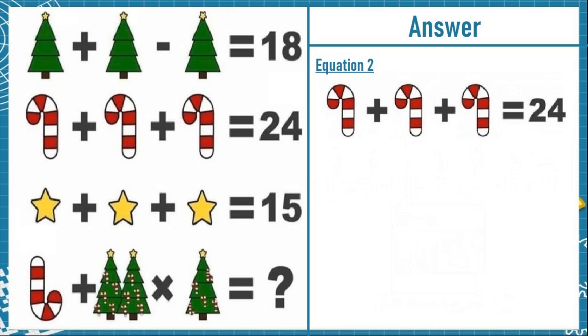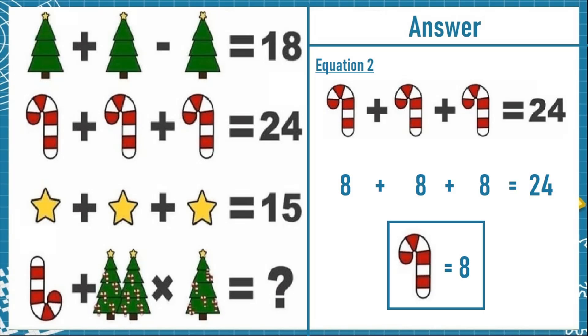Now on to equation number 2: we have candy plus candy plus candy is equal to 24. So 8 plus 8 plus 8 is equal to 24, meaning a candy is equal to 8.